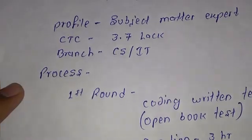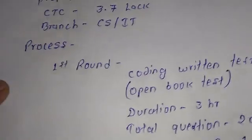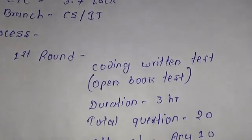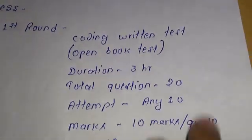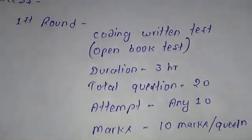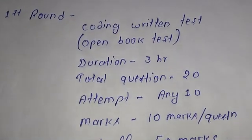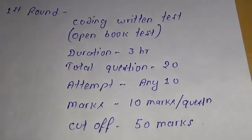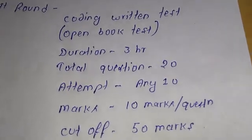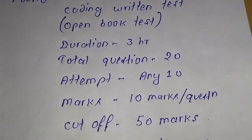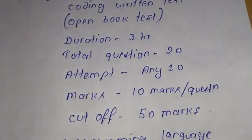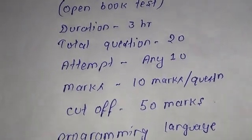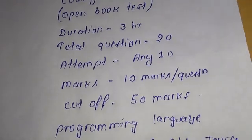So the process is like first round is coding test. That is open book test, you can use a book to see if you have not better understanding of any question or any concept. It is basically a three hour question paper. You will have to write on paper with pen. There are 20 questions and you will have to attempt any 10 questions only. 10 marks per question. Cutoff is 50 marks, which means you will have to correct five questions.